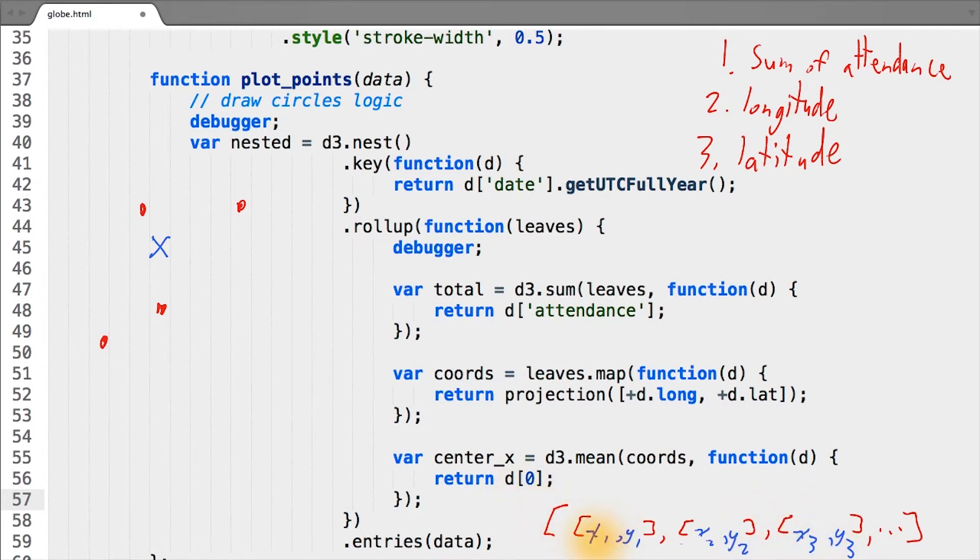And by summing and then dividing by the total number of all the x values, we simply get the mean, which gets stored in center_x.